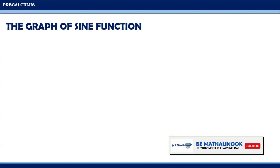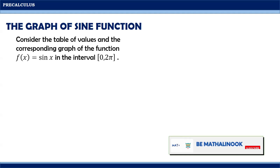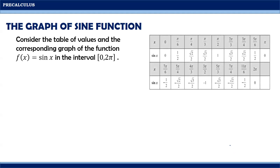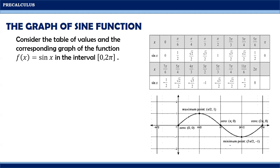Let us now talk about the graph of the sine function. Consider the table of values and the corresponding graph of the function f(x) = sine x in the interval 0 to 2π. This is the table of values for the sine function, given x as your angle and sine x as your f(x). Plotting these points on a Cartesian plane, we will have this graph. Notice from the graph that the portion which is repeated every period gives one complete cycle. Thus, the period of f(x) = sine x is 2π.